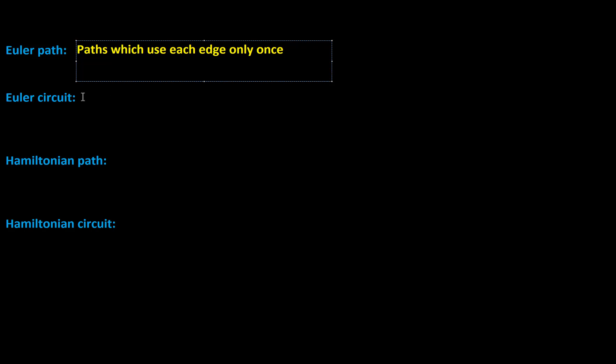If we want to look at Euler circuits, these are similar, but we're talking about a circuit. A circuit is like a closed path that starts and ends at the same vertex. So this is a path that starts and ends at the same place and uses each edge only once.